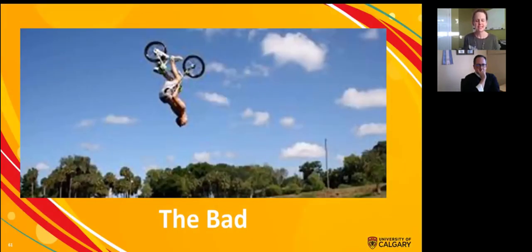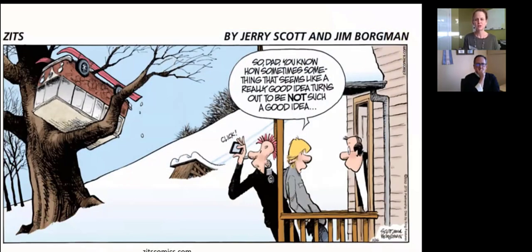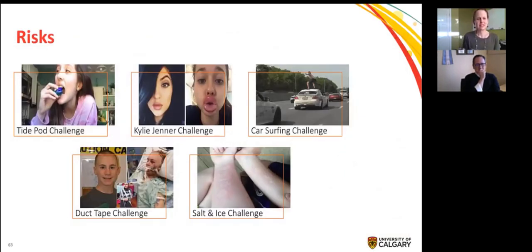All right, so looking into the bad, teens are excessive risk takers. Zits is one of my favorite cartoons. I think that they do a fantastic job of capturing adolescence. So you can see here that he says, so dad, you know how sometimes something seems like a really good idea and turns out not to be such a good idea? I think this is the essence of teenage risk taking. So these are just some examples of some of the things that have been in the media in the past years about the risks that teenagers take. And when Frank and I did this in a junior high school, we talked about how teenagers know that these are stupid and that all the kids are like, yeah, but they do them anyway. And so we asked if they knew anybody who did some of these and most hands went up and some kids even yelled out, I did some of them. So they understand that these things are dangerous, but they do them anyway. So we'll talk a little bit later about how we can have this juxtaposition of cognitively understanding risks, but engaging in them anyway.